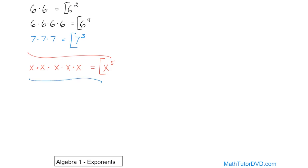What if you had the variable y multiplied by y, multiplied again by y? Again, what we're multiplying is y and we're doing it three times, so the exponent is 3 — y to the power of 3. It's very simple.